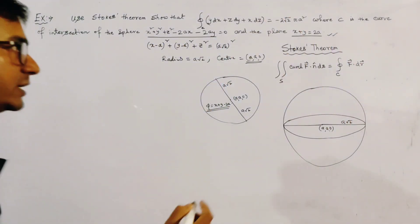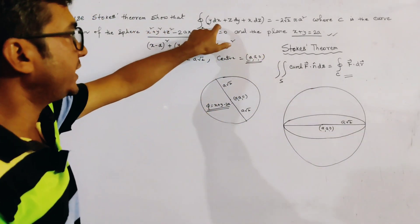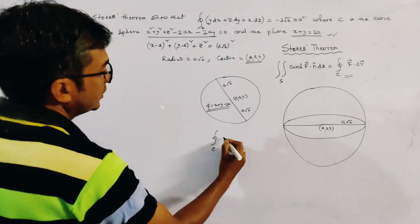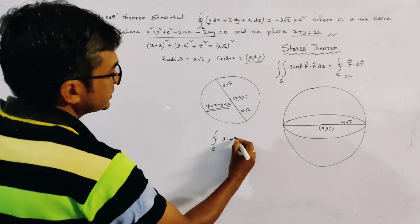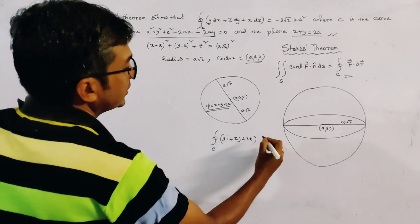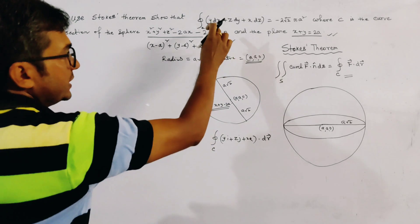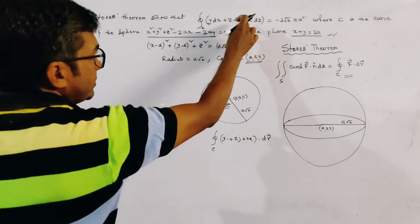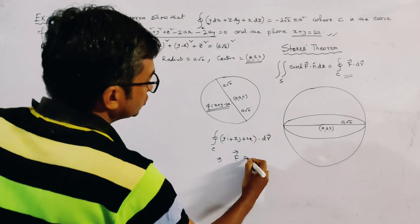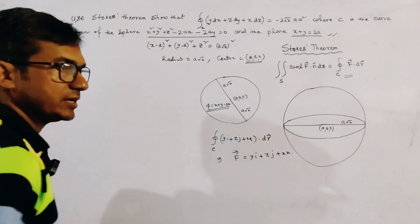The right-hand side is given. What is F? If we write the circulation over C as the integral of (y i plus z j plus x k) dot dr, where dr equals dx i plus dy j plus dz k, then clearly F vector equals y i plus z j plus x k.